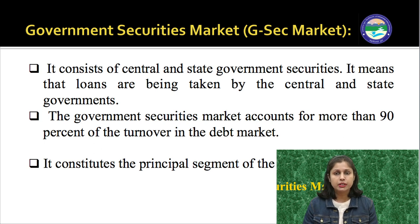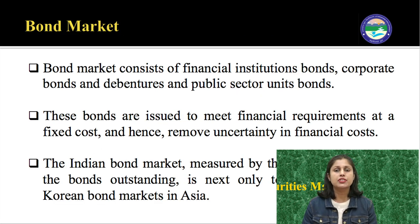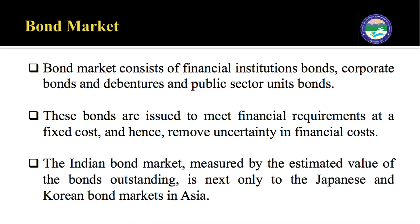The government security market constitutes the principal segment of the debt market, covering 90% of it. Next, we have the bond market, which consists of financial institutions' bonds, corporate bonds and debentures, and public sector unit bonds. These bonds are issued to meet financial requirements at a fixed cost, thereby removing uncertainty in financial cost. Bonds are issued on a six-monthly or yearly interest basis. The Indian bond market, measured by estimated value of bonds outstanding, is next only to the Japanese and Korean bond markets in Asia.